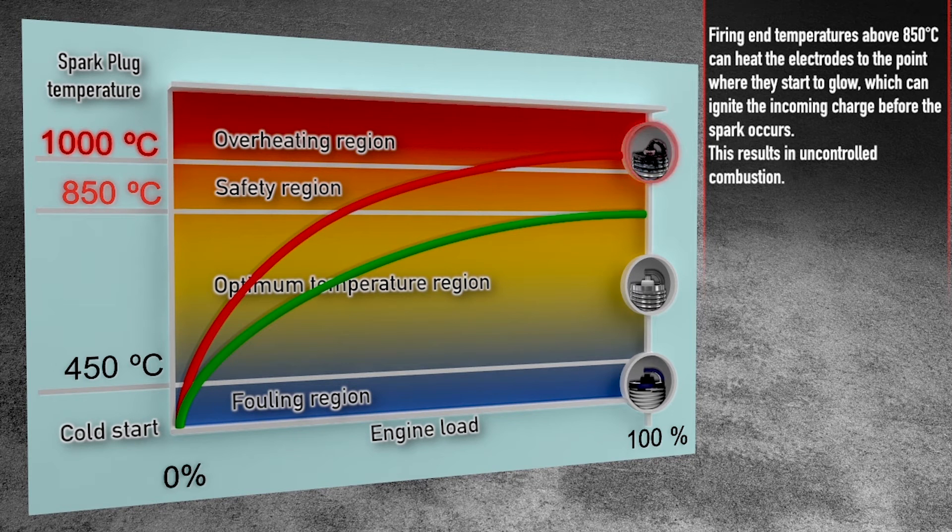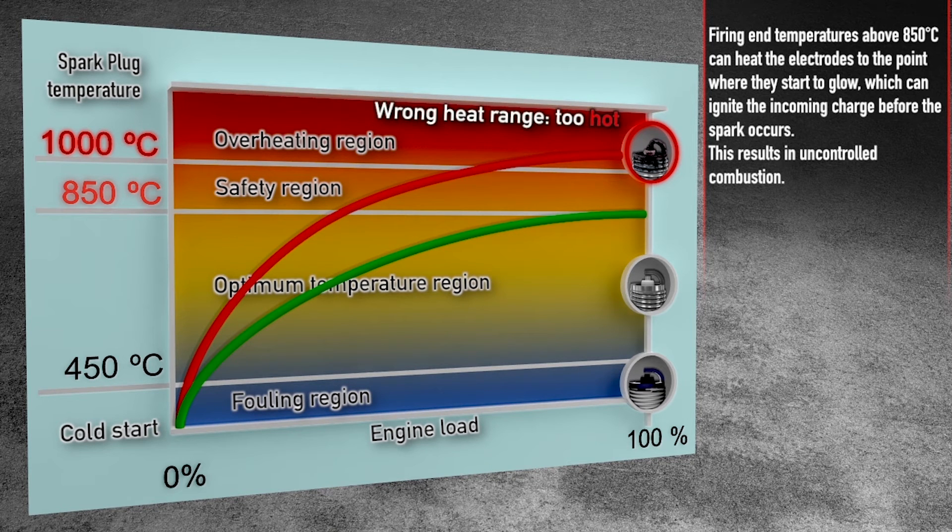Firing end temperatures above 850 degrees Celsius can heat the electrodes to the point where they start to glow, which can ignite the incoming charge before the spark occurs. This results in uncontrolled combustion.